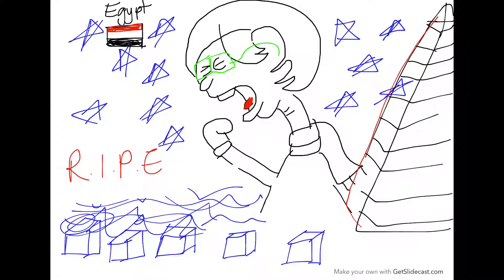Today we will be discussing a mnemonic for antitubercular drugs. On this diagram we see a woman who is in Egypt, and Egypt is cold. The pyramids of Egypt are behind her. The first one we're going to talk about is ethambutol, which is the 'E' — ripe ethambutol causes a serious side effect of colorblindness.